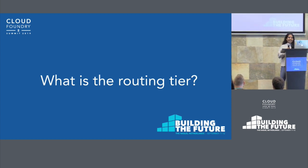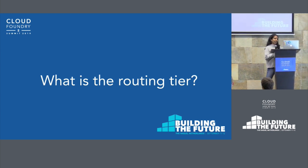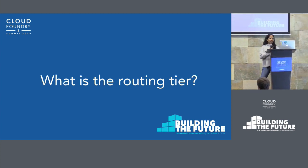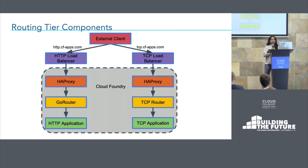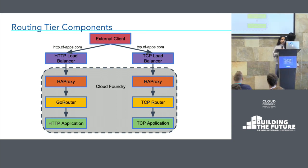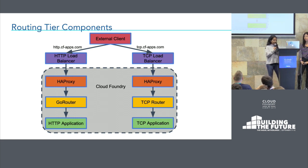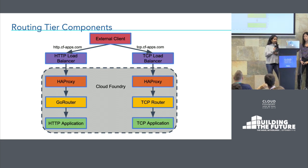So what is the routing tier and how does it fit into the rest of your cloud boundary? Looking at this diagram, the gray box represents all the system components of CF, like your API, Diego, UAA, and your routers — the components that make it possible for you to CF push and run your applications. All the colorful components are the components of the routing tier. In a typical CF deployment your routing tier may consist of a load balancer, HA proxies, the routers, and your applications.